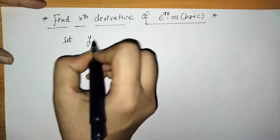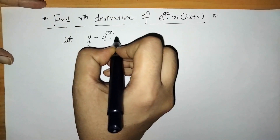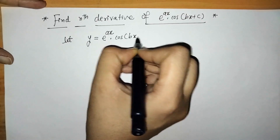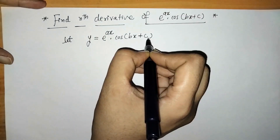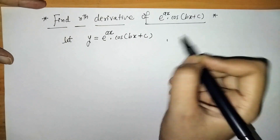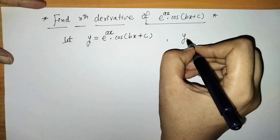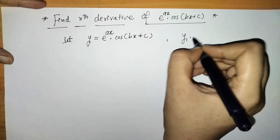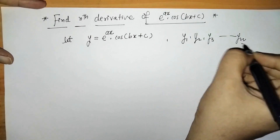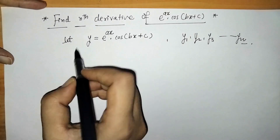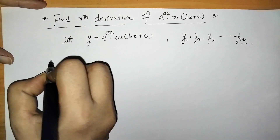Let's write here y is equals to e raised to ax into cos of bx plus c, where a, b and c are constants. We have to find its nth derivative, that means first we have to find y1, then y2, y3 up to yn. So let's differentiate this y with respect to x.